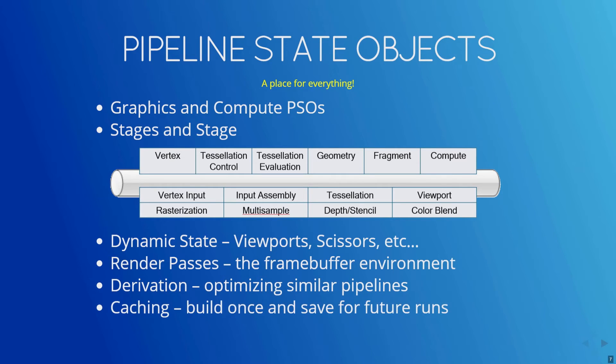Once built or compiled, pipelines can be cached or serialized from one run to another, saving the time it takes to build one. This is similar in concept to OpenGL's pre-compiled shaders, but a lot more encompassing.